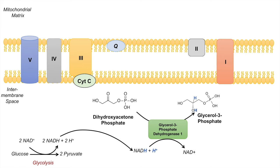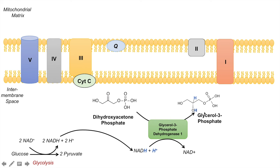The cell does this by utilizing the enzyme glycerol-3-phosphate dehydrogenase 1. In the process, the NADH is oxidized back to NAD+, and those 2 protons are added to the dihydroxyacetone phosphate, producing glycerol-3-phosphate.